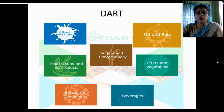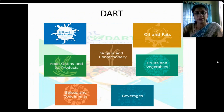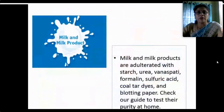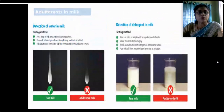The DART booklet covers all food categories — milk and milk products, oils and fats, sugars and confectioneries, food grains and products, fruits and vegetables, spices and beverages — with 50 to 60 tests available. You can access it on the FSSAI website. For milk and milk products: to detect water, place a drop of milk on a polished slanting surface — pure milk stays or flows slowly leaving a wide trail; adulterated milk with water will flow immediately without leaving a mark.